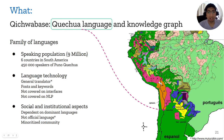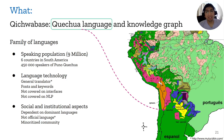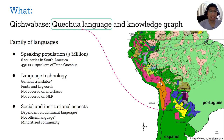On the social and institutional side, the Quechua language is becoming increasingly dependent on dominant languages like Spanish. Quechua is not an official language in Peru, though it is in Bolivia. It is becoming a minoritized community in Peru, as Quechua speakers have been pushed into the Andes and the country is not developing around Quechua as a language.